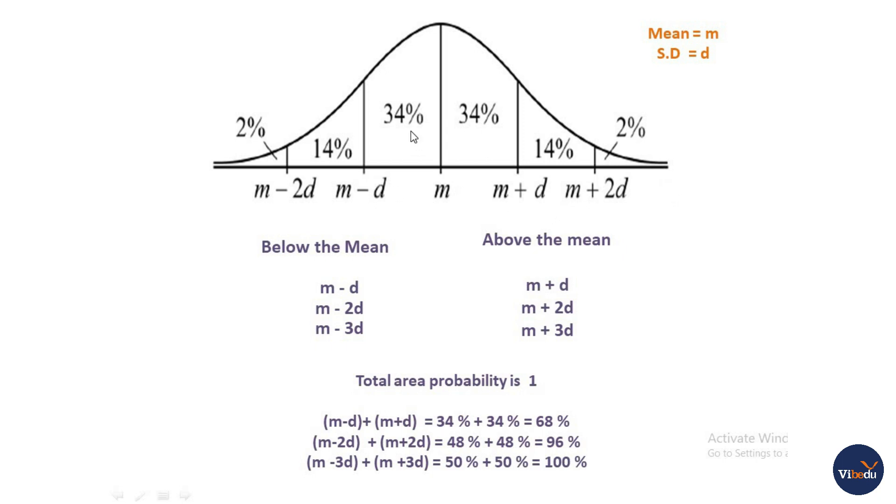In the M-D to M vary from 34%, M-2D to M-D vary from 14%, M-3D to M-2D vary from 2%. So M-D plus M+D, 34 plus 34% is 68%. That's why M-D to M+D total percentage is 68%.